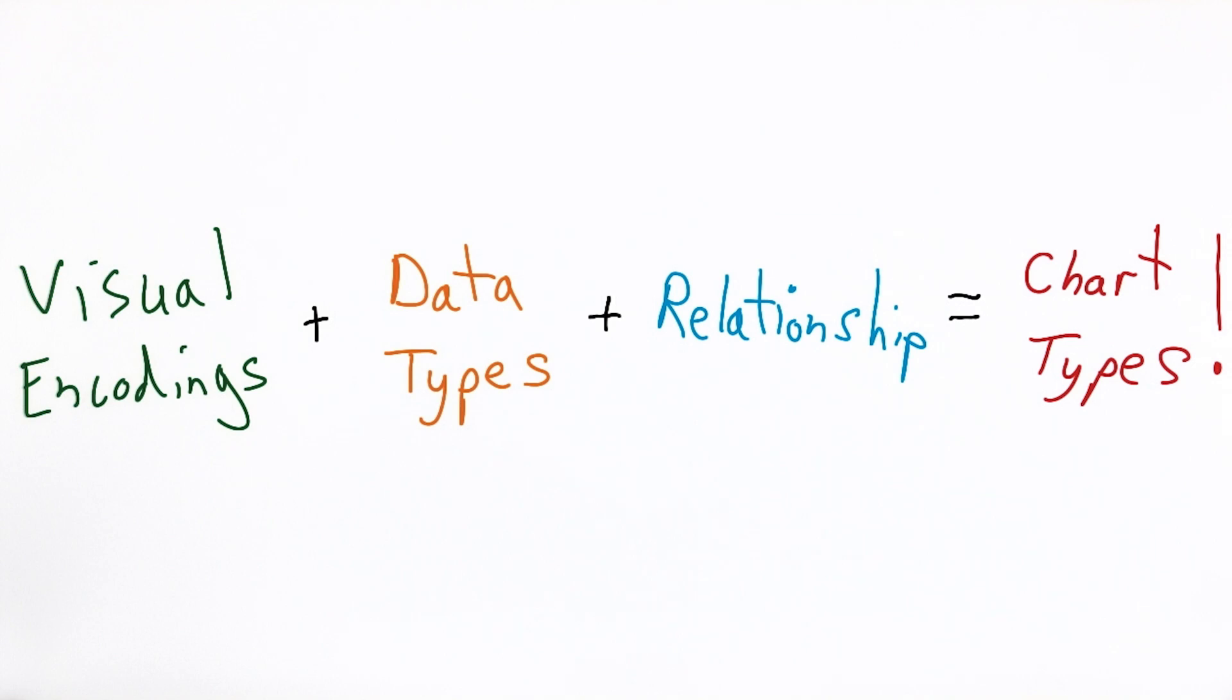For example, a scatter plot is an x coordinate and y coordinate with a shape, in this case a circle, as applied to two continuous variables, continuous being their data type, in which the y value is dependent on the x value, which corresponds to the relationship between them. And combining all three of these things, we get the chart type of a scatter plot.